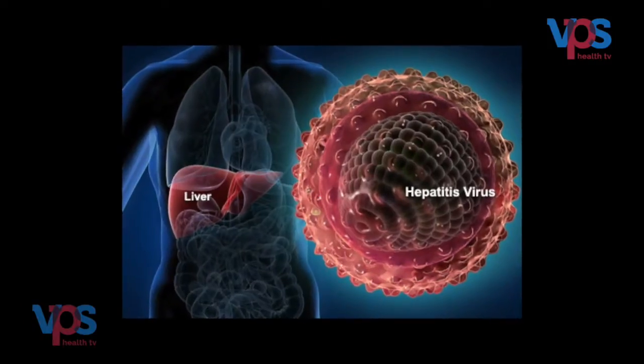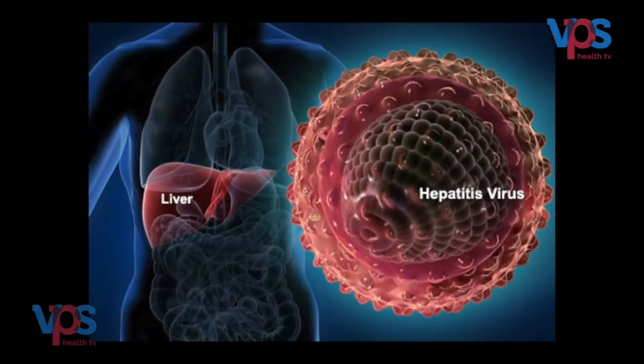If the patient is young, we have to think about viral hepatitis. There are a few common viral hepatitis types spread through food and water — hepatitis A and hepatitis E. These are self-limiting diseases, so we need only supportive treatment for them.